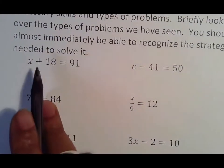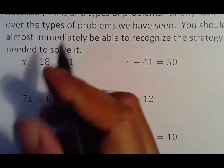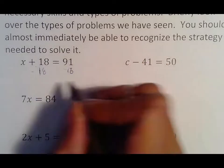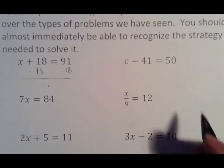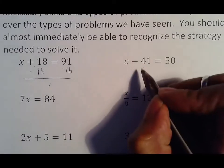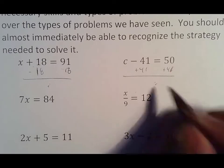For example, if we have x plus 18 equals 91, we should recognize this is being added and that we would subtract 18 from both sides and move on. If we saw c minus 41 equals 50, we should recognize it means minus 41, so I will add 41 to both sides and move on.